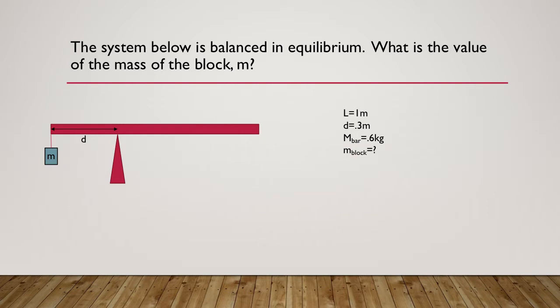So I have a bar with a mass of 0.6 kilograms, a length of one meter, and it's set on a pivot, shown right here, that's a distance of 0.3 meters from the end. There's a mass of unknown value that hangs from the leftmost end of the bar.